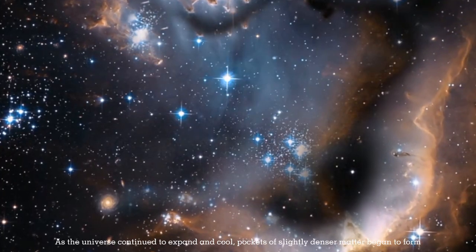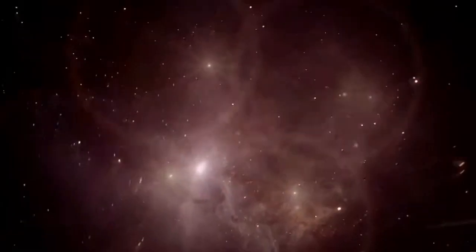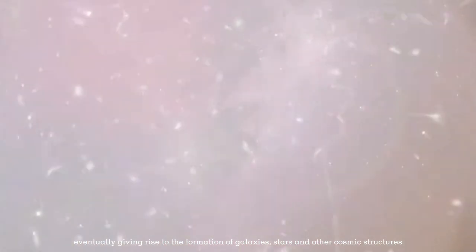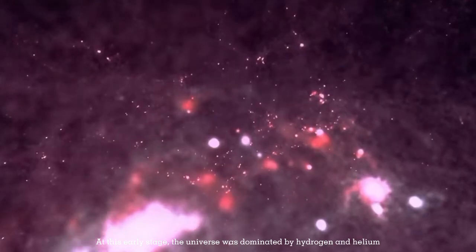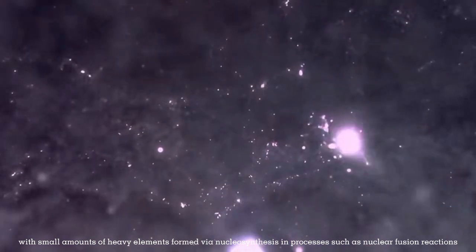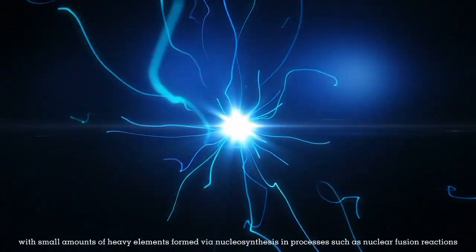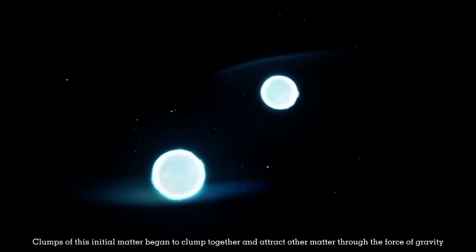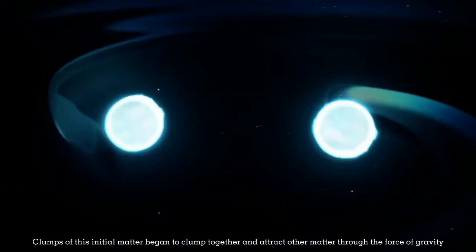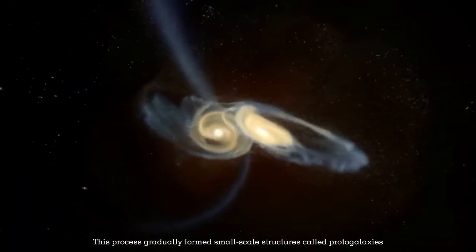As the universe continued to expand and cool, pockets of slightly denser matter began to form, eventually giving rise to the formation of galaxies, stars and other cosmic structures. At this early stage, the universe was dominated by hydrogen and helium, with small amounts of heavy elements formed via nucleosynthesis in processes such as nuclear fusion reactions. Clumps of this initial matter began to attract other matter through the force of gravity.